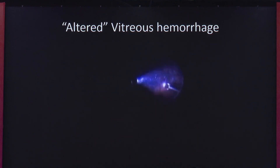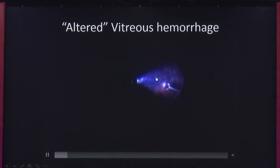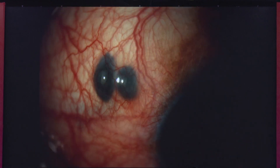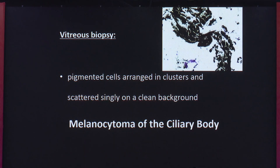Vitreous hemorrhage — this patient had altered vitreous hemorrhage along with dense pigmentation within. What this patient had was actually a melanocytoma of the ciliary body, which presented with vitreous hemorrhage.